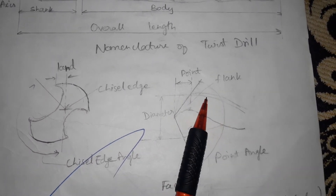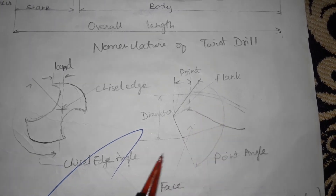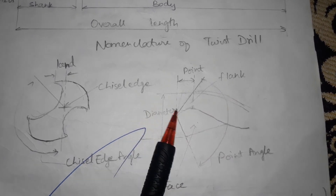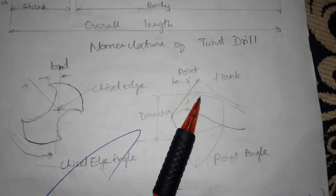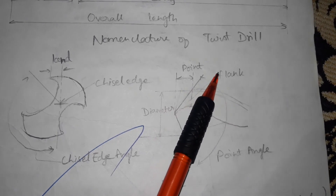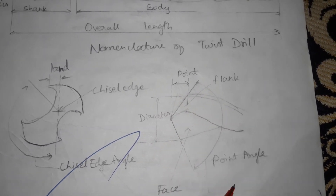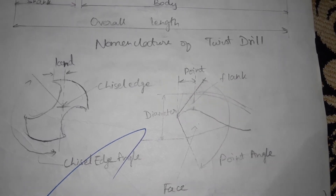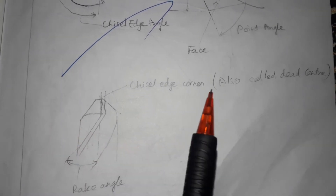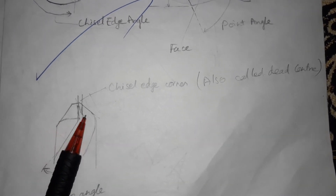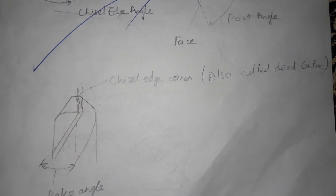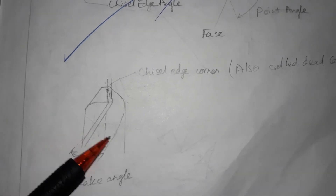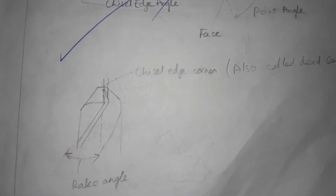The diameter is the distance between the two ends of the twist drill. From the end of the tool to the push point, this area is called the flank. This is the point angle. The chisel edge corner is also called the dead center. This is the helix at the top of the twist drill, and this is the rake angle.